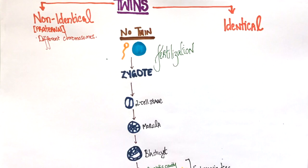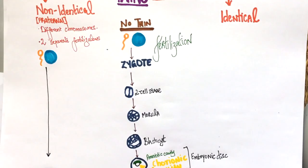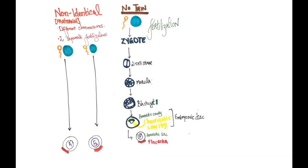Since the sperm and egg contribute to the chromosomes of the fetus, fraternal twins are formed when there are two separate fertilizations. Twin 1 is formed by this fertilization and twin 2 is formed by this one. All the other steps are the same.